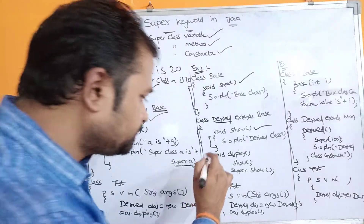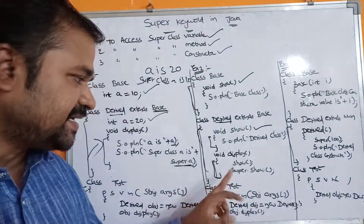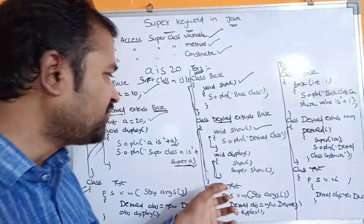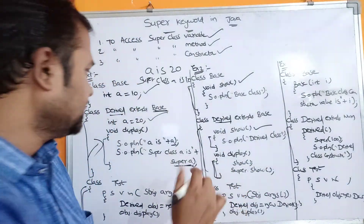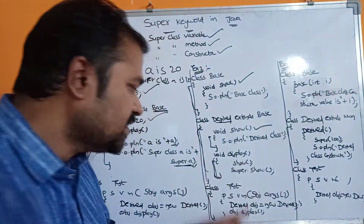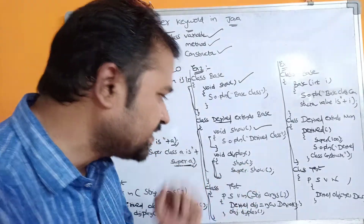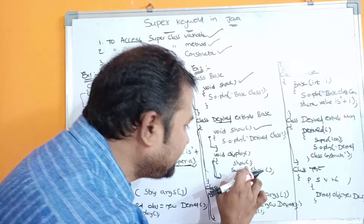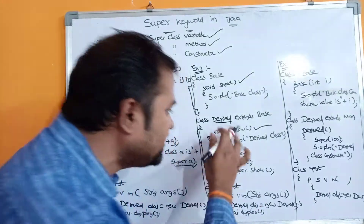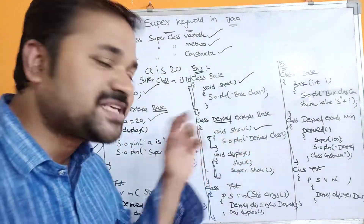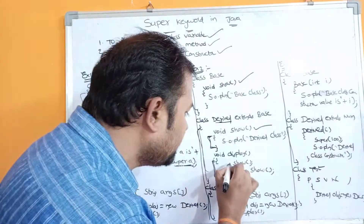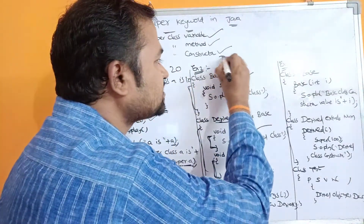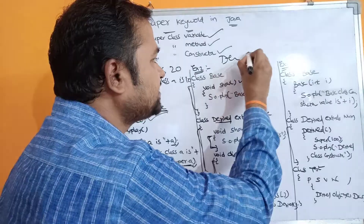We also have one more method in the derived class - the display method. The display method is present only in the derived class. Inside display, if we call show() without any qualifier, the show method defined in the derived class (the subclass) will be called. Its body prints "derived class", so that message will be printed.